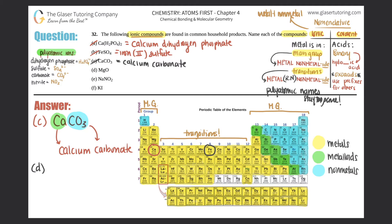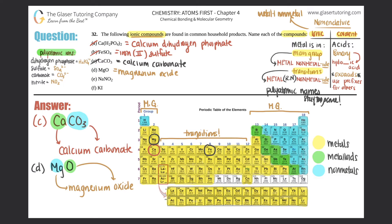Compound D: MgO. Mg is magnesium, a main group metal, so no Roman numeral. Then we have oxygen — this is not a polyatomic, it's just oxygen from the periodic table. Oxygen gets the -ide ending and becomes oxide. Compound D is magnesium oxide.